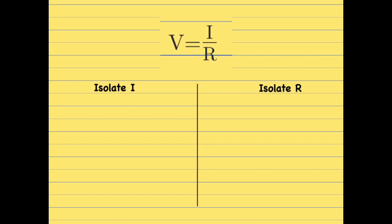So first I'm going to start by writing my equation V equals I over R. And remember, we want to leave the letter I alone. Okay? So if I want to leave my letter I alone, I need to cancel my R.